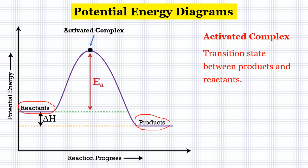On this diagram, there are a couple of things we need to explain. The first is our activated complex. Our activated complex is the transition state between the products and the reactants — it's the very top of that hill you see in the diagram. All potential energy diagrams are going to look like a hill, so the activated complex is easy to spot because it's at the top of that hill. Just know that it is a transition state.